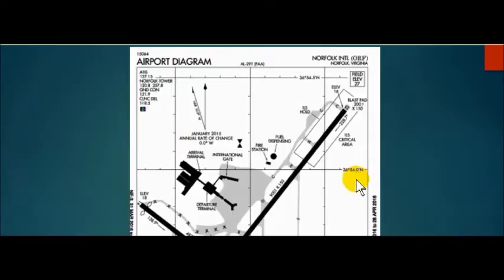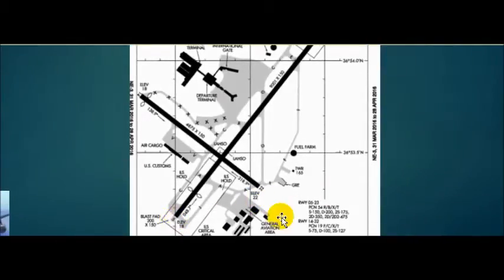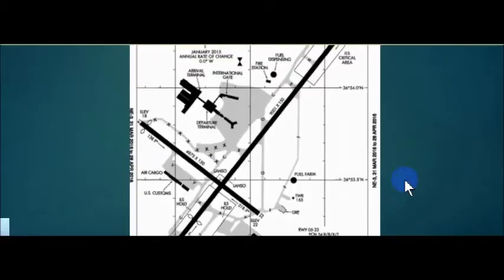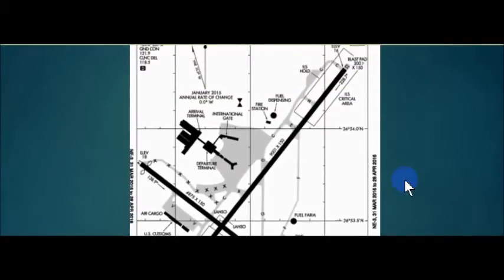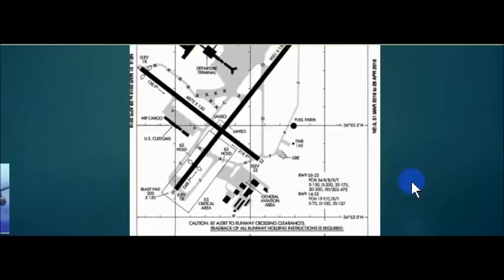We have the options of taking off from runway 23, 14, 32, or runway 5 — two main runways with the option of departing in four different directions. We don't know which one yet but we keep our airport diagram handy. We will not have to taxi to the active runway without knowing it after listening to ATIS and finding out what the active runway is.